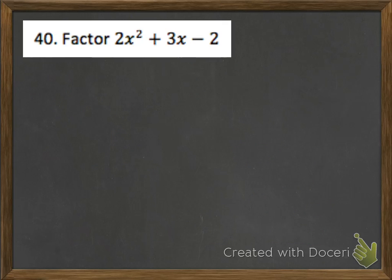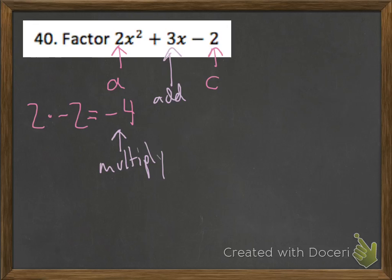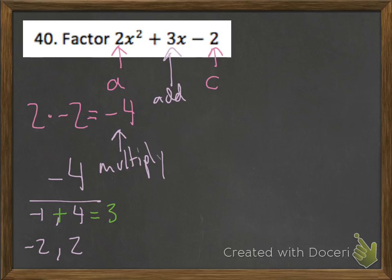Problem 40 wants us to factor 2x squared plus 3x minus 2. There's a number in front of the x squared, so I need to use the AC method. A is 2 and C is negative 2; multiplying gives negative 4. I need two numbers that multiply to negative 4 and add to positive 3. The factor pairs are 1 and 4, and 2 and 2. Since 3 is positive, the bigger numbers need to be positive, so I try negative 1 plus 4 equals 3 — that's what I was looking for.